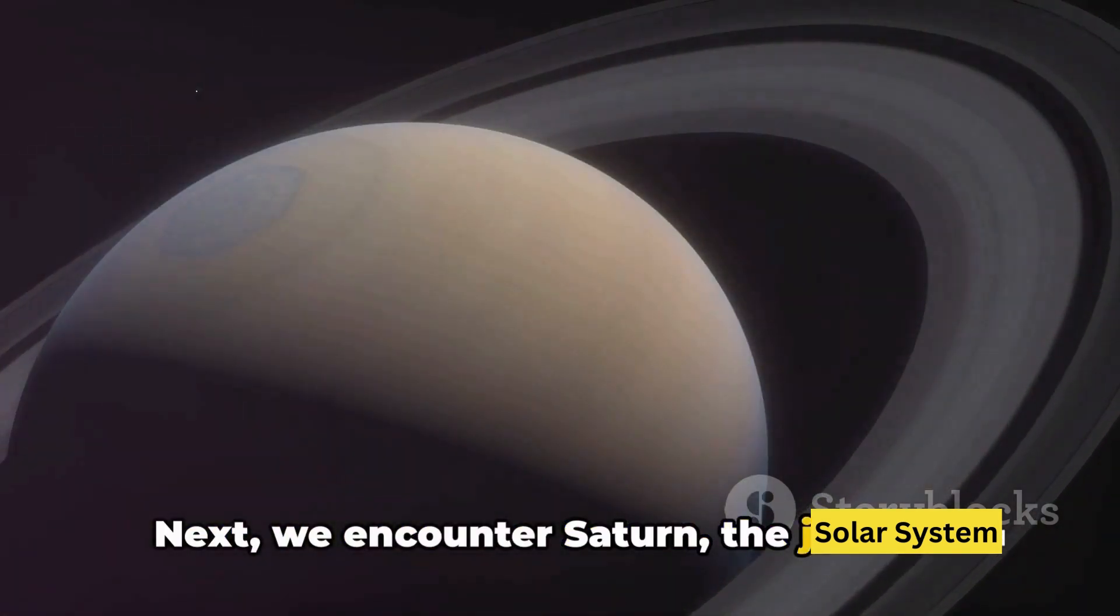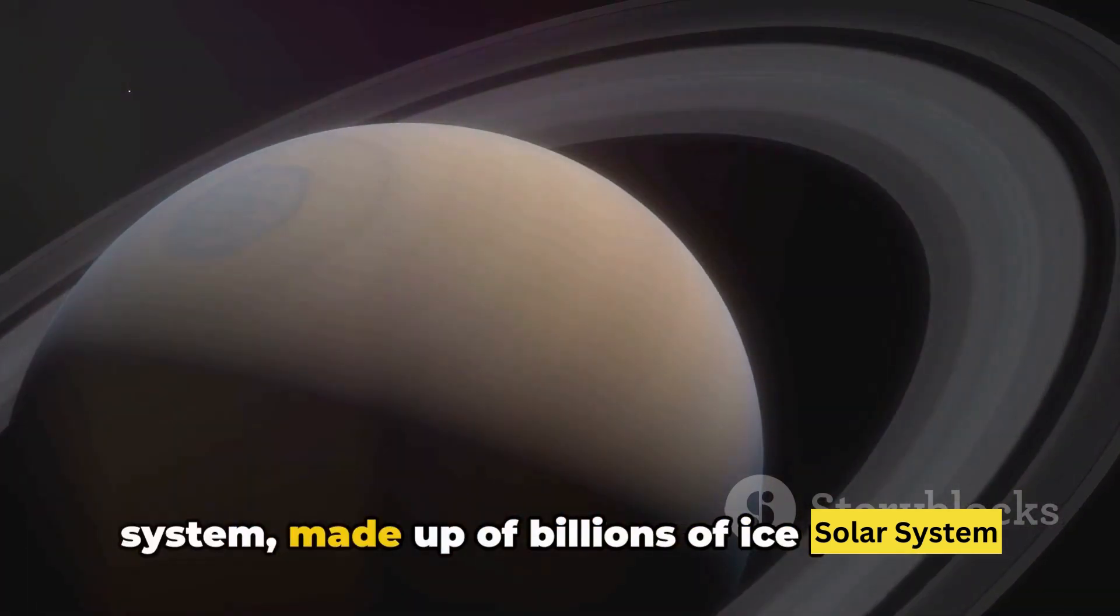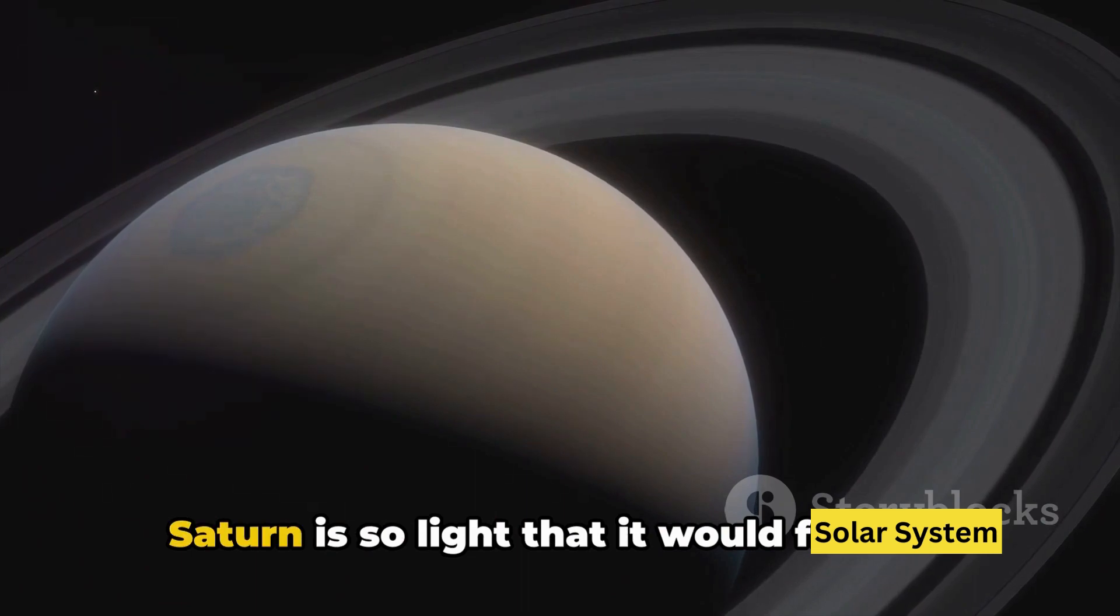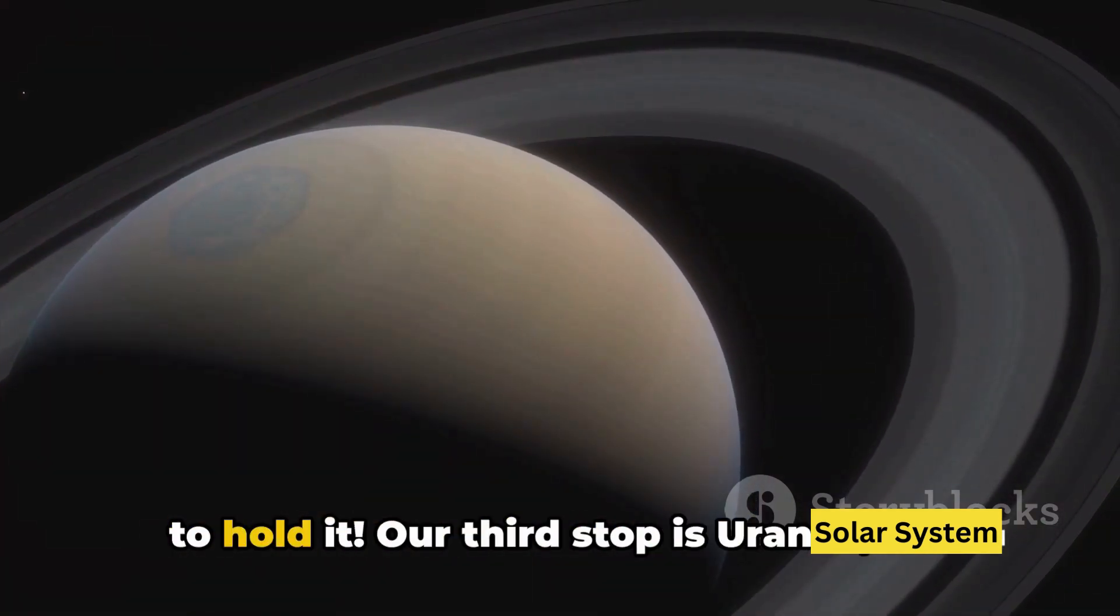Next we encounter Saturn, the jewel of our solar system. It's best known for its dazzling ring system, made up of billions of ice particles. Saturn is so light that it would float on water if there was a bathtub big enough to hold it.